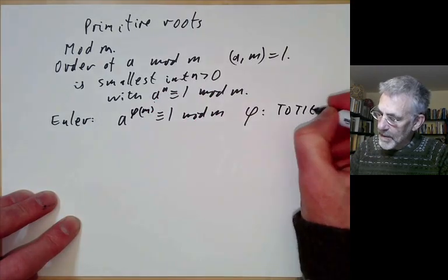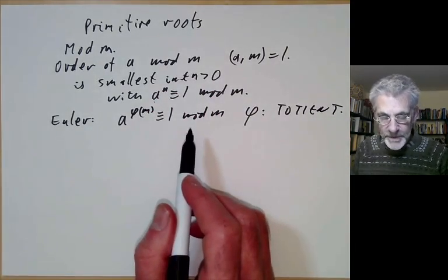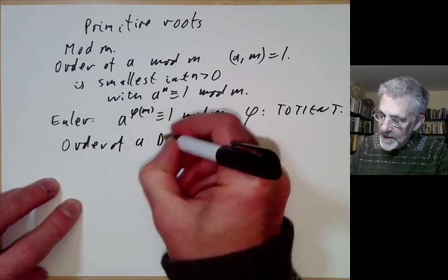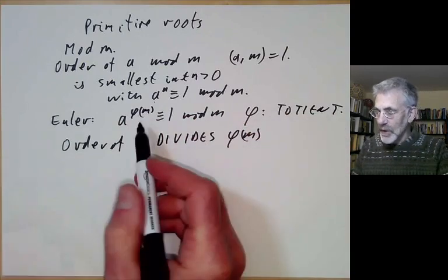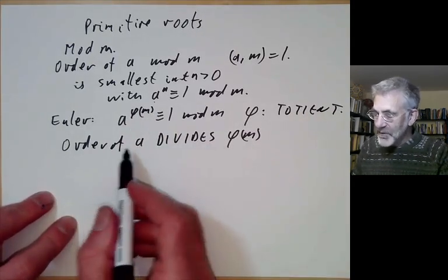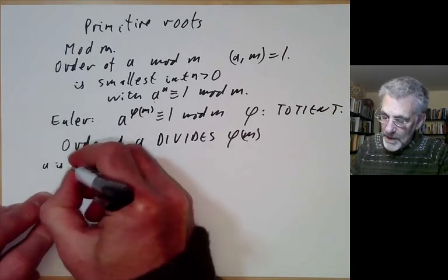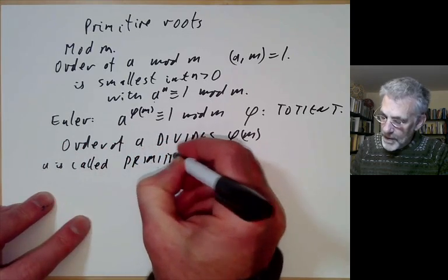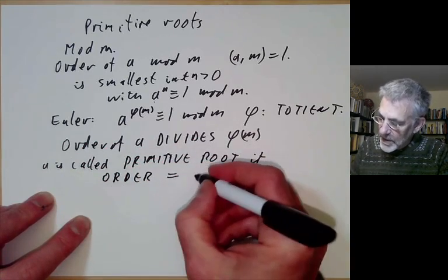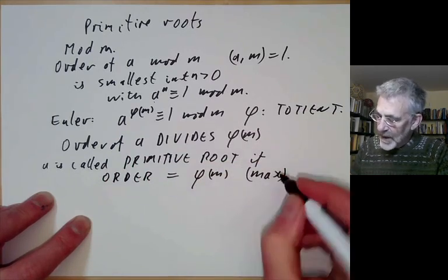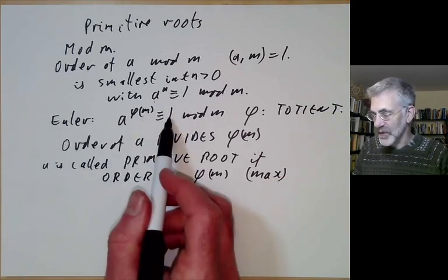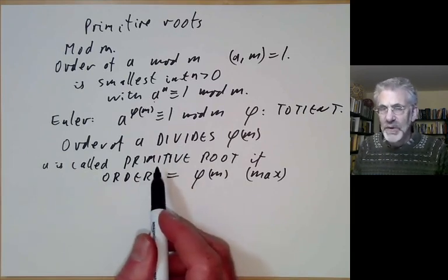Here phi is Euler's totient function. So the order of a divides phi of m, because we recall that the order of a divides any exponent such that a to that exponent equals 1. So the maximum possible order of a is going to be phi of m, and we say a is called a primitive root of m if the order of a is equal to the maximum possible value phi of m.